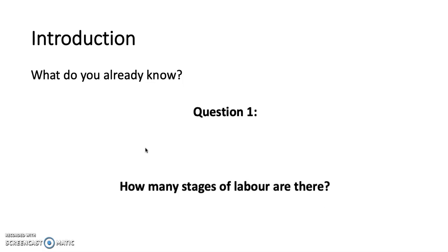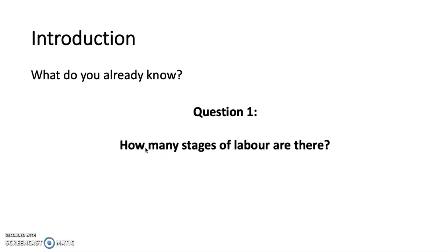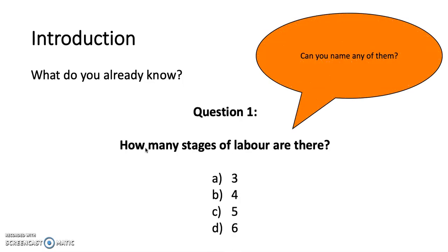Question one: how many stages of labour are there? Is it A) 3, B) 4, C) 5, or D) 6? And can you name any of them? Have a little think. The answer is A) 3. There are three stages of labour: dilation, expulsion, and the delivery of the placenta.